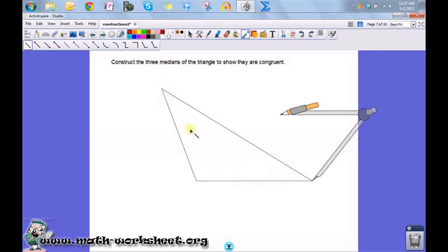So the first thing I want to do is find the midpoint of each of the sides. I'm going to do that by essentially just finding the perpendicular bisector of this side.